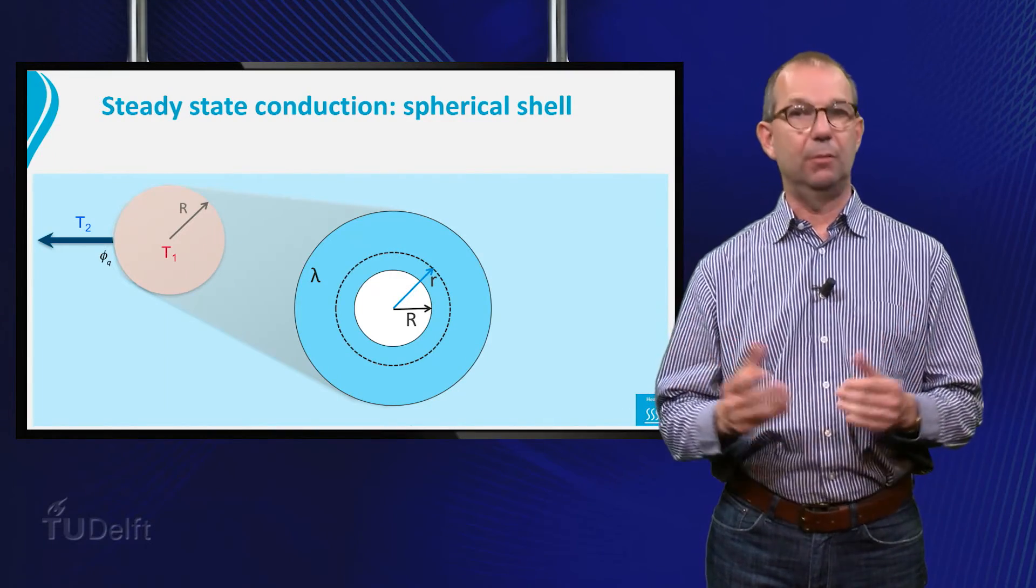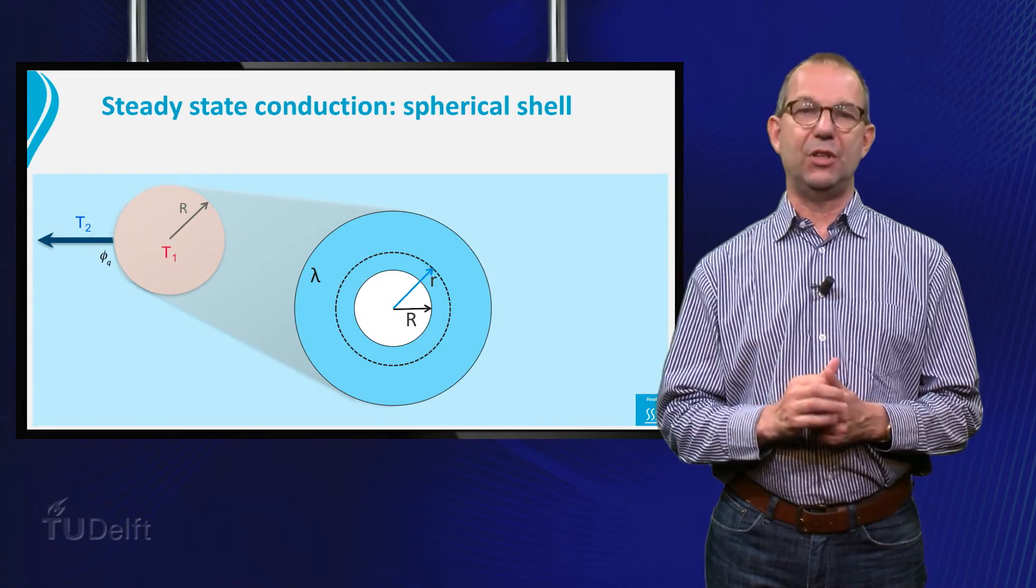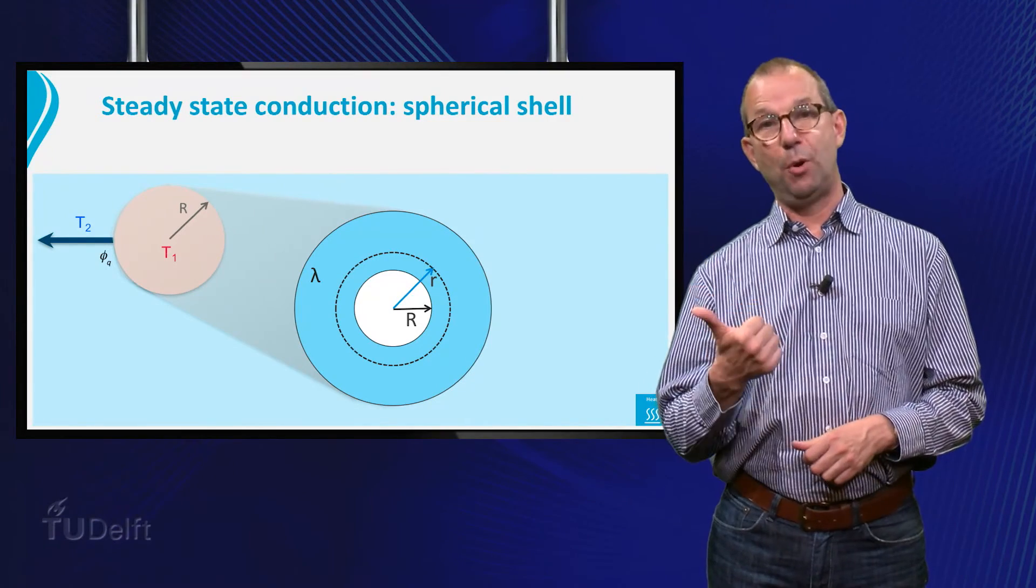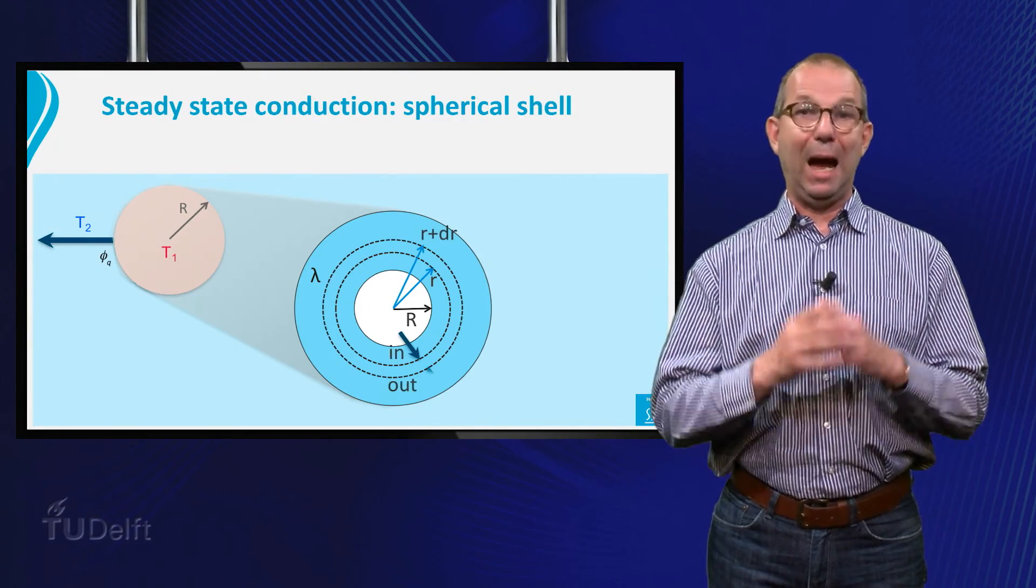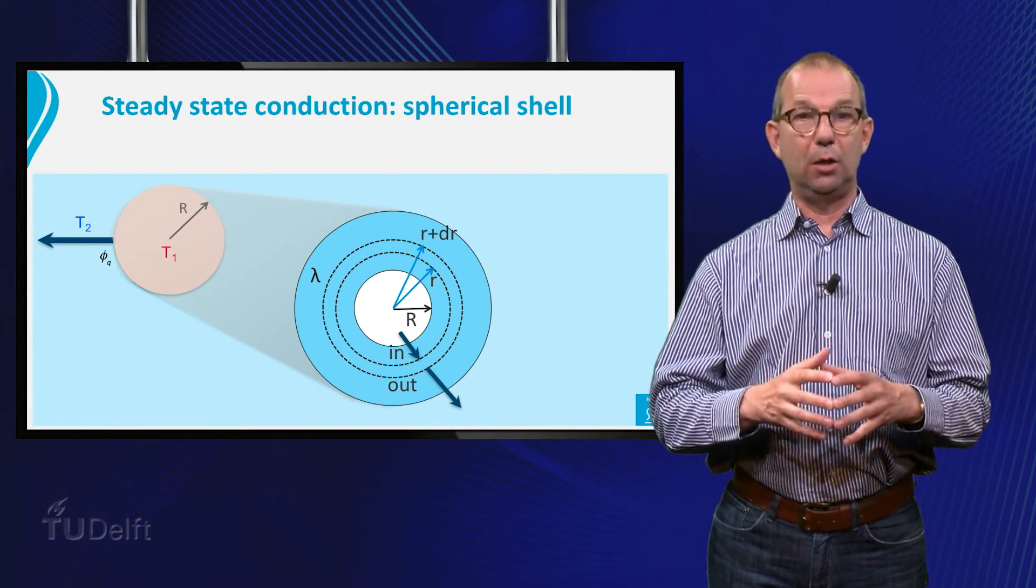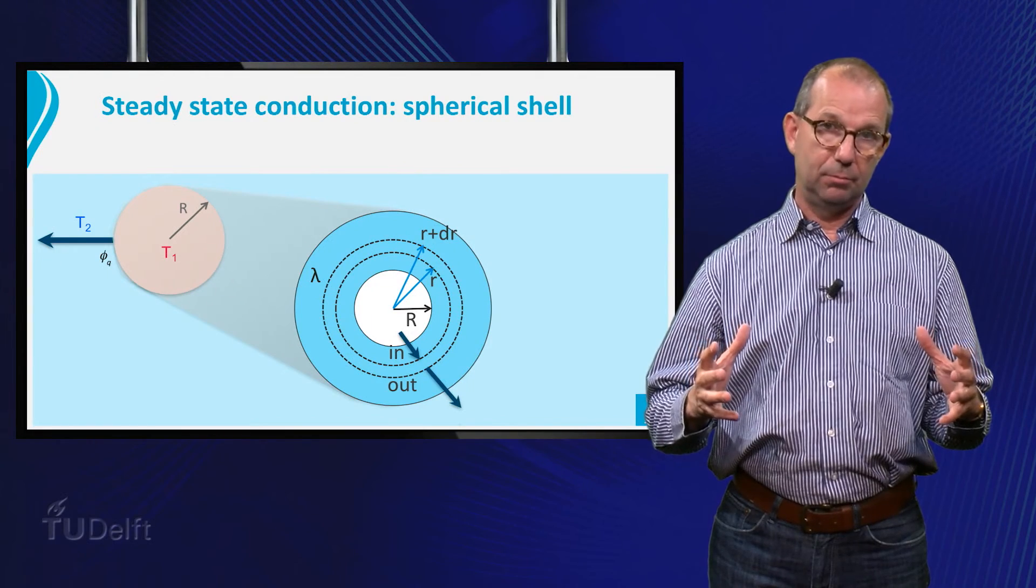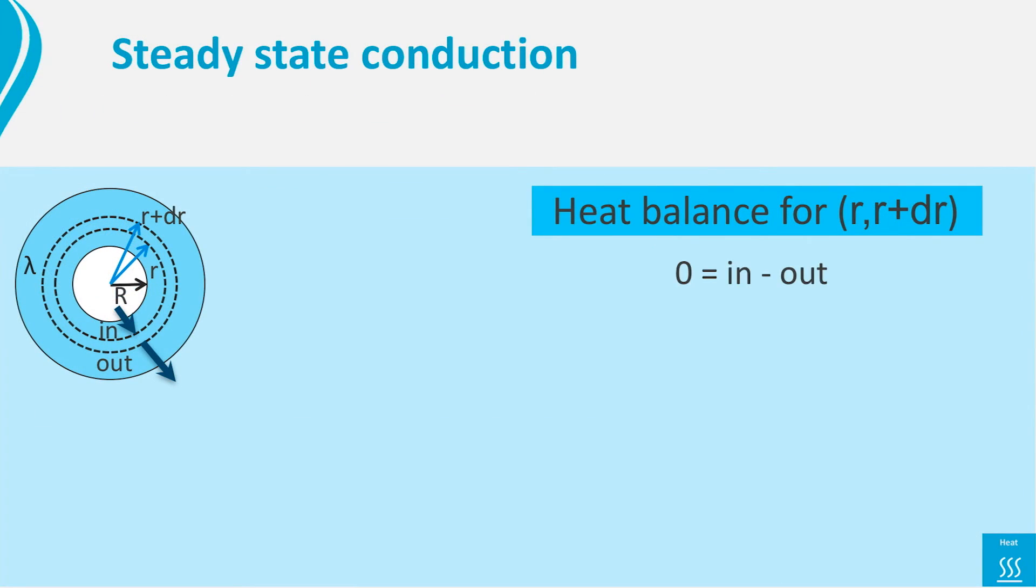By now we understand what to do. Select a proper volume around the sphere, that is, a spherical shell outside the sphere between r and r plus dr. Next set up a steady state heat balance for this shell. This will again lead to 0 is in minus out. Note that this looks pretty much the same as for the cylindrical case. We write the heat flows again using Fourier's law.